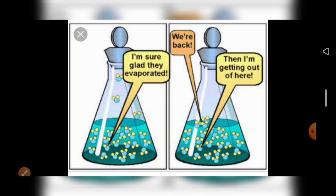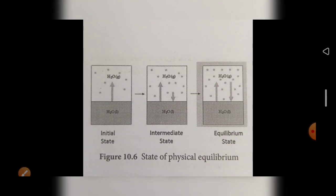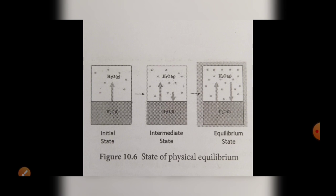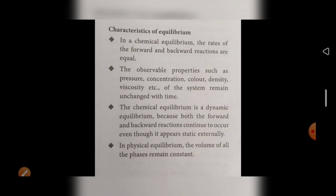Next, how the initial, intermediate, and equilibrium states are attained. Take H₂O as an example: initially, a small amount of water molecules escape. In the intermediate state, more water molecules escape. After that, suppose 80% of the water molecules escape as water vapor, after which condensation becomes equal to evaporation. At the equilibrium state, both forward and backward reactions are equal — first only forward reaction, next a little backward reaction, and after that both become equal.